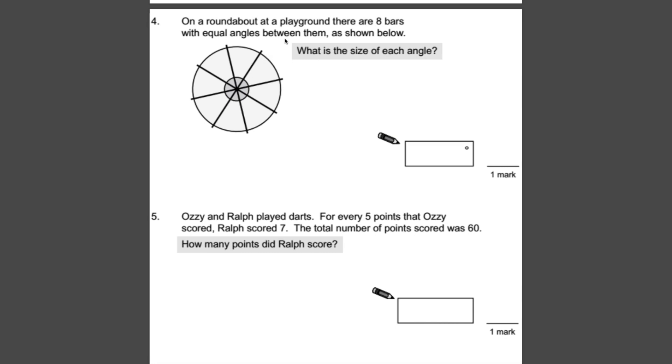Number four. On a roundabout at a playground, there are eight bars with equal angles between them, as shown below. What is the size of each angle? Right, this is important. You need to know how many degrees are in a full circle. Now, you should know that that equals 360 degrees. So that's how much that entire circle has got in its interior angle. In order to find these individual angles here, then, because they're chopped into eight equal parts, if we divide 360 by eight, we should get our answer.